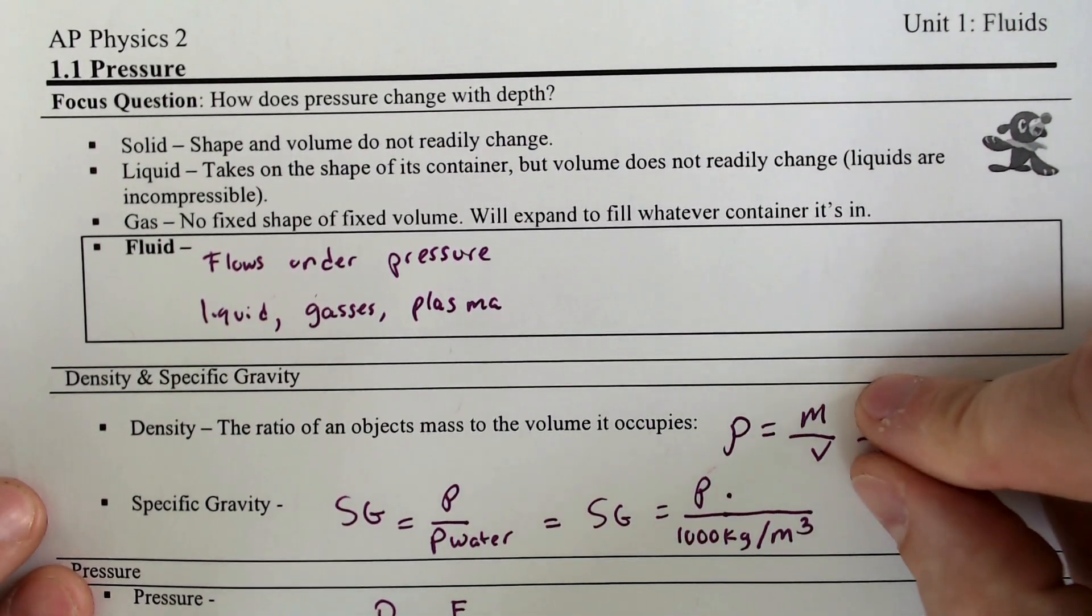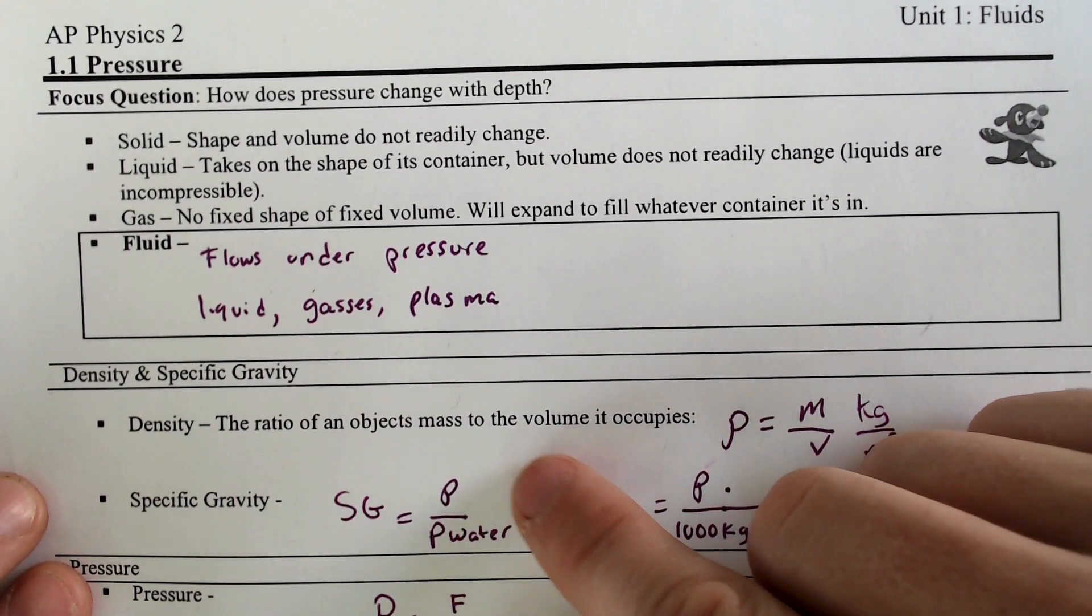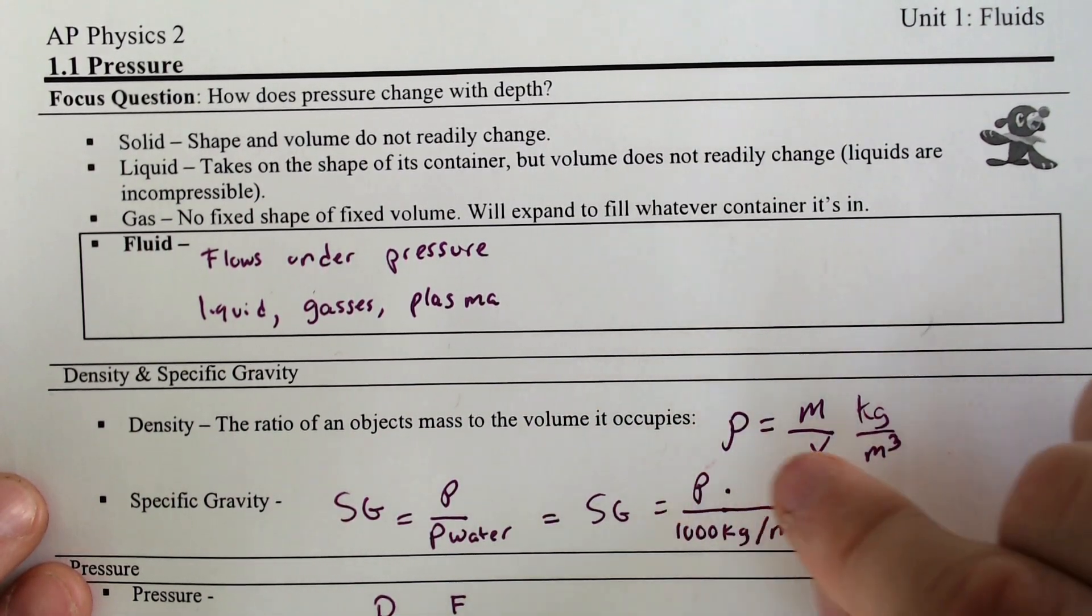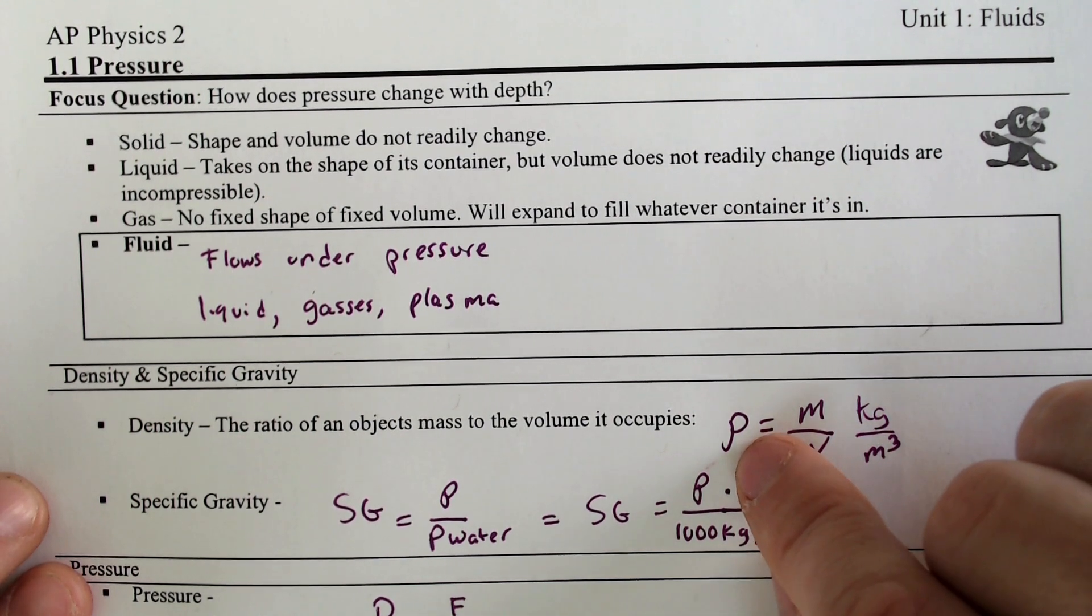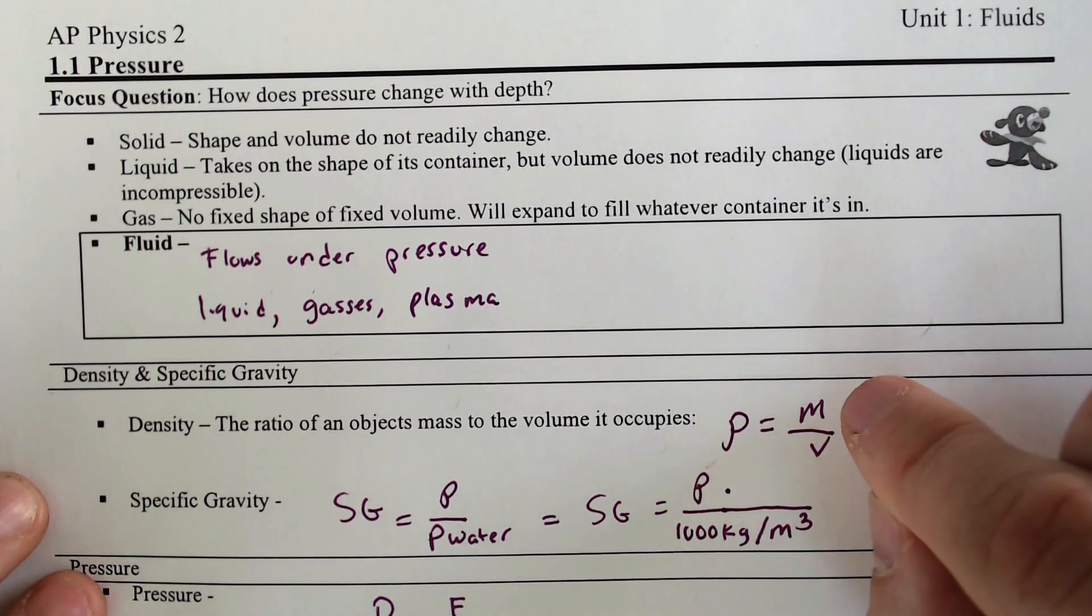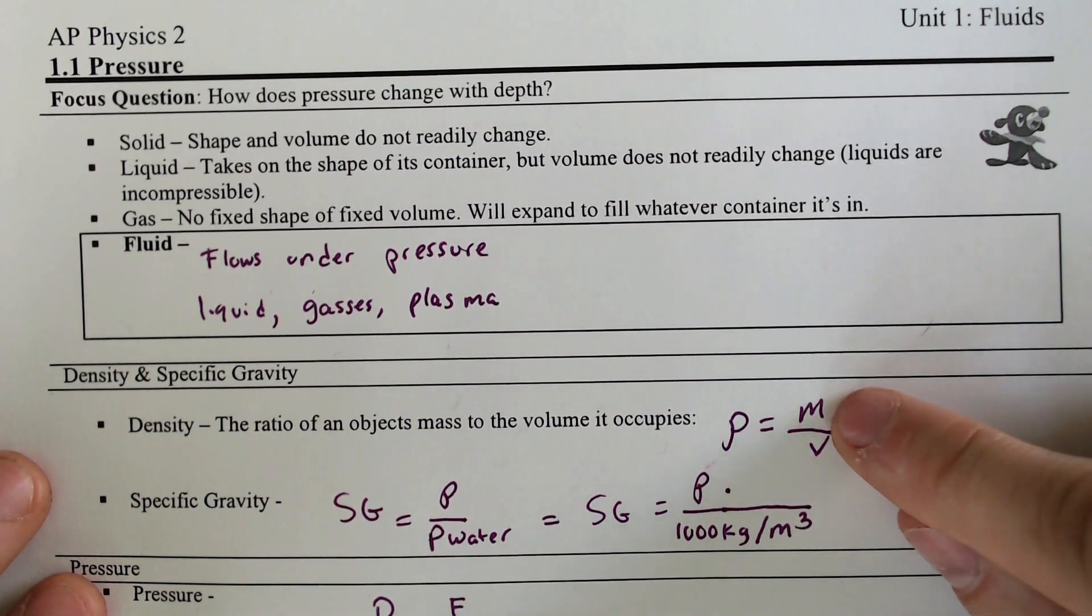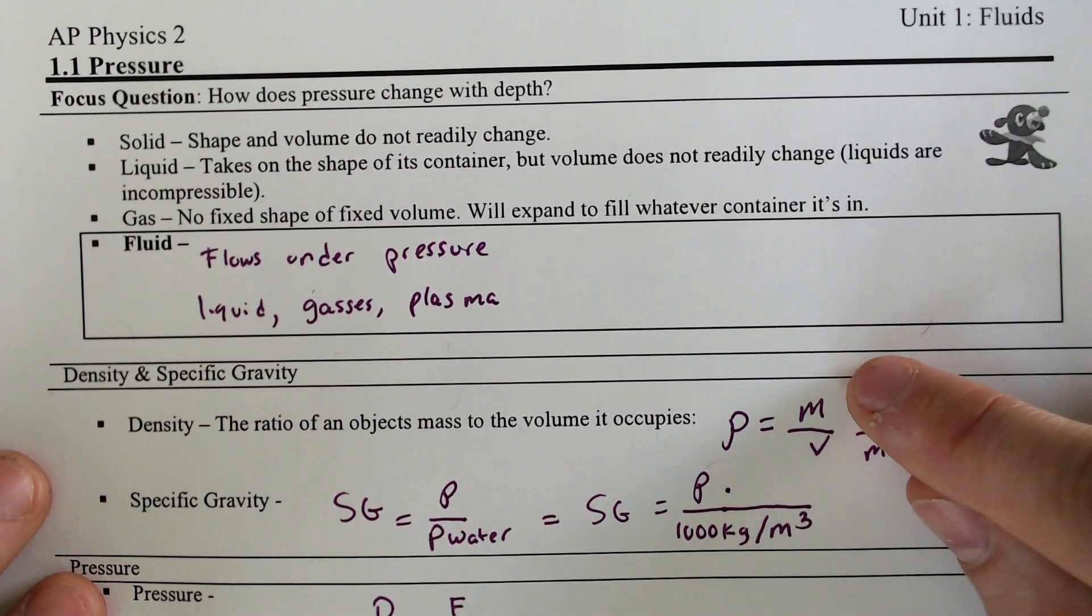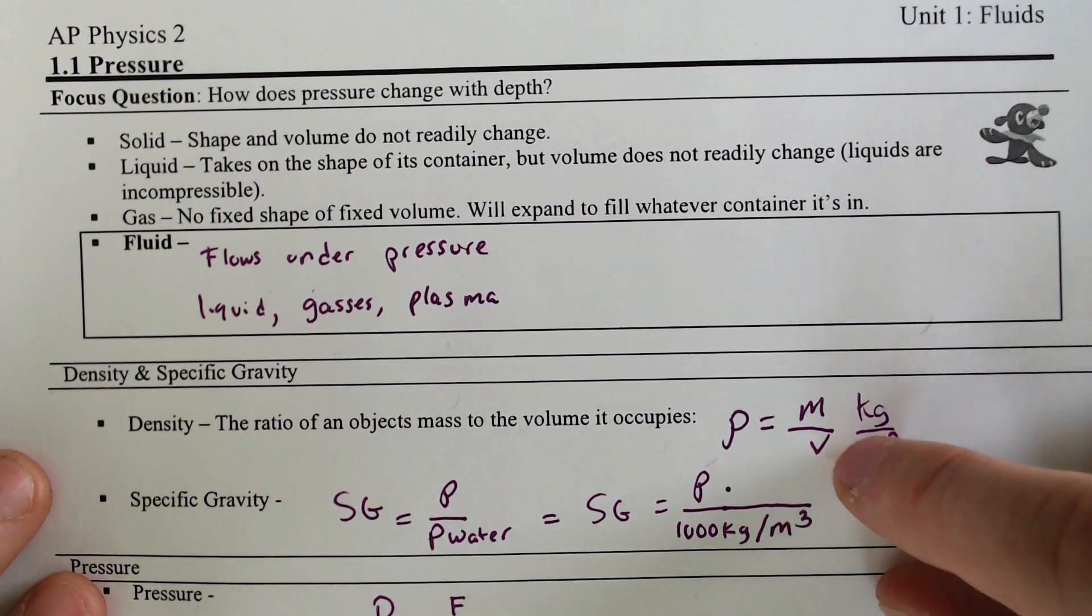Density is a big topic that we're going to have to talk about. Density is the ratio of an object's mass compared to its volume that it occupies, which is denoted by the symbol rho, this lowercase p. Density is relating the mass compared to its volume.